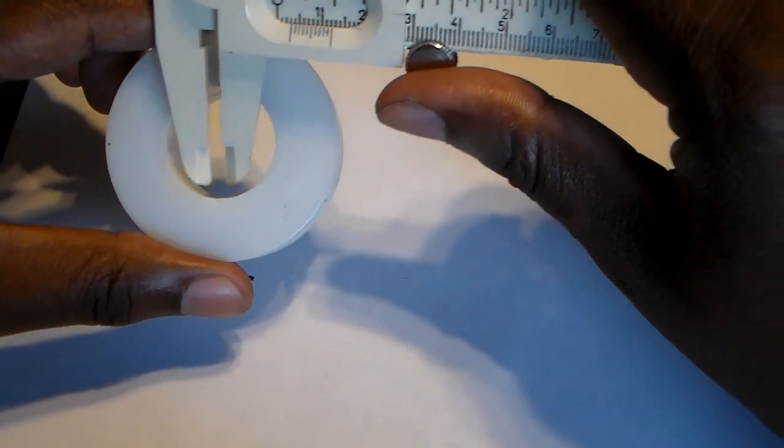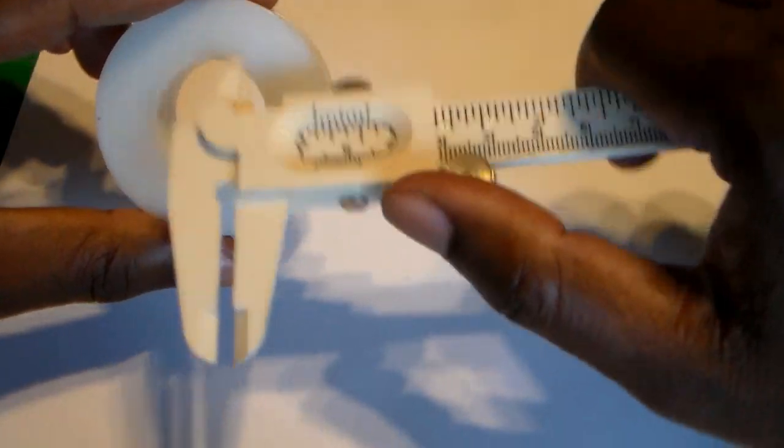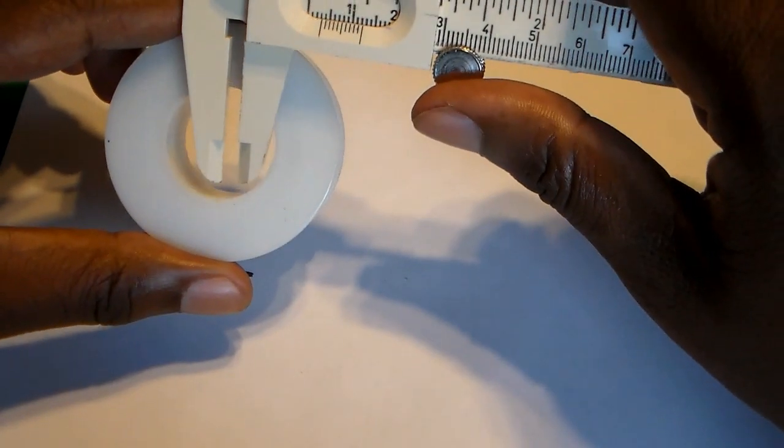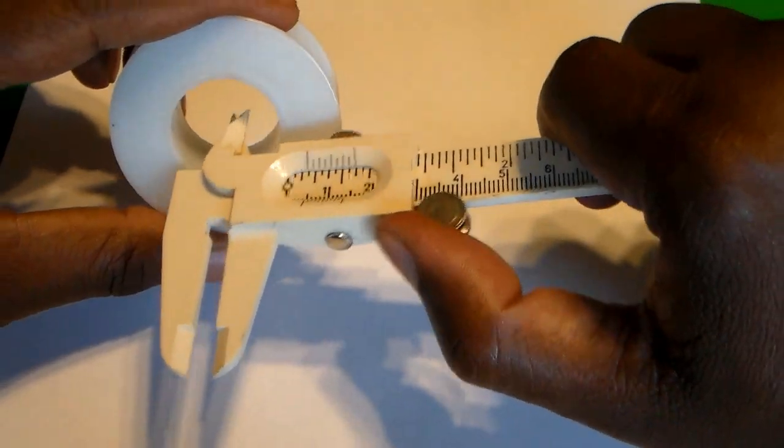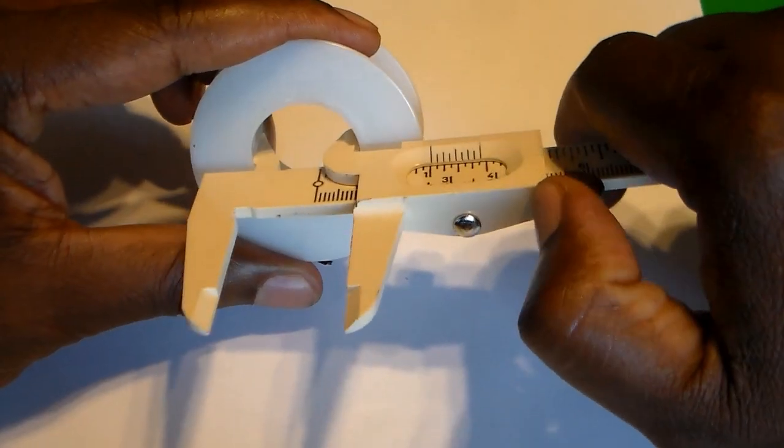What I would do is I can't use the outside here, or I can, but it'll be not as precise as using the inside here. So what I can do is I can actually expand the calipers on the inside.